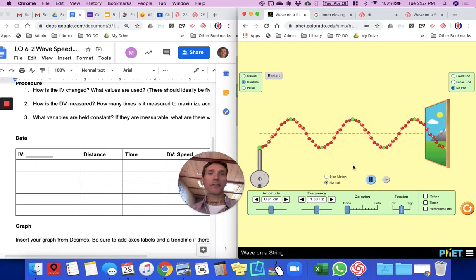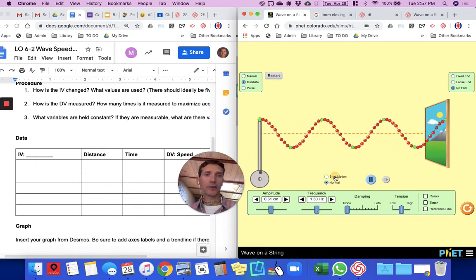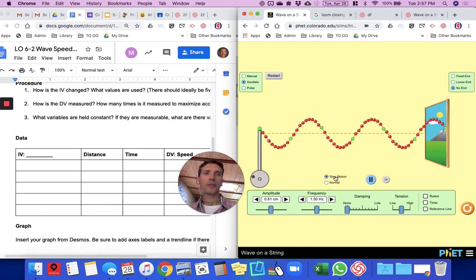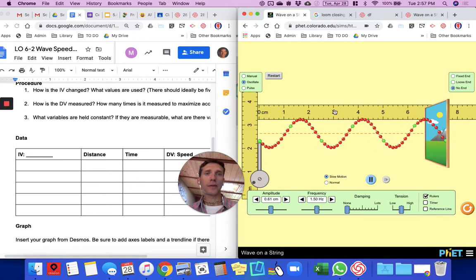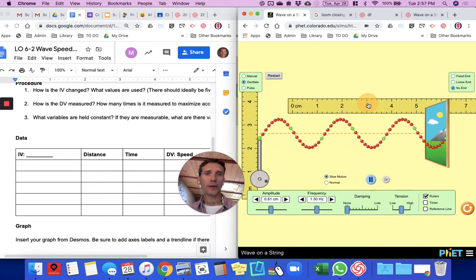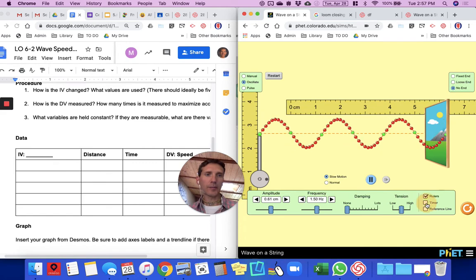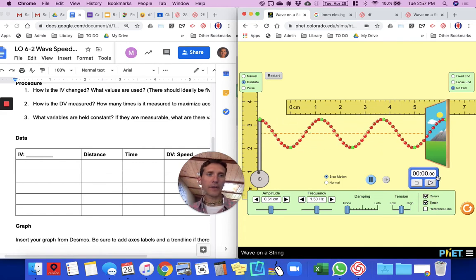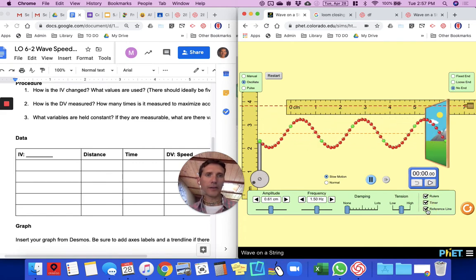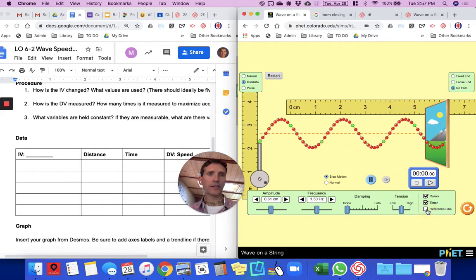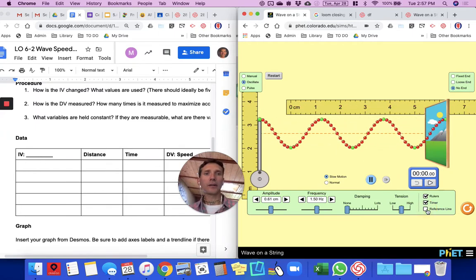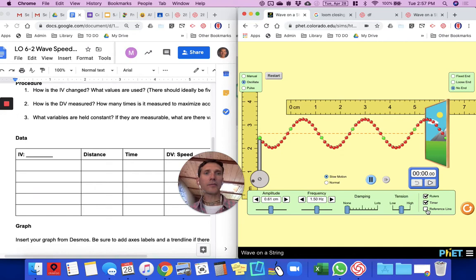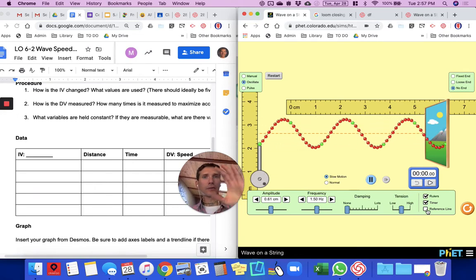There are some very useful features. The first is slow motion, which you can use to slow down everything. The second is you can add a ruler and move it around. There's also a timer that can be added here, and there's a reference line, but I don't think you'll need it for this one because this investigation is looking at the speed of the waves, which doesn't have anything to do with how tall they are.